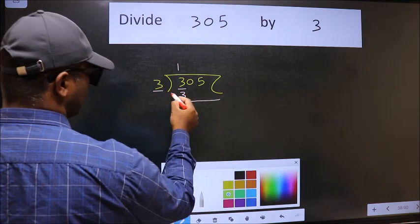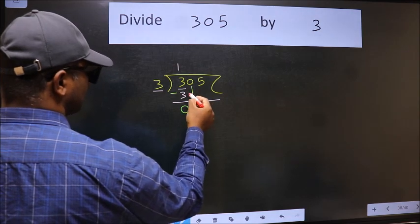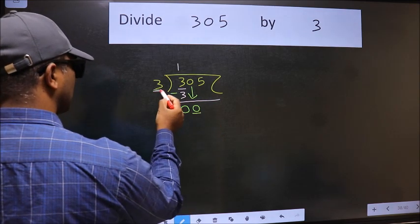Now we should subtract. We get 0. After this, bring down the beside number. So 0 down. Now here we have 0 and here 3.